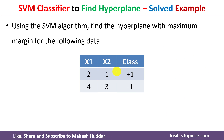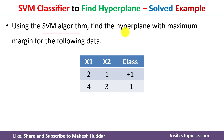In this case, we have been given a dataset with two examples and two features. The first example belongs to class 1 and the second example belongs to class minus 1. We need to apply the SVM algorithm on top of this given data and then find the hyperplane with the maximum margin.